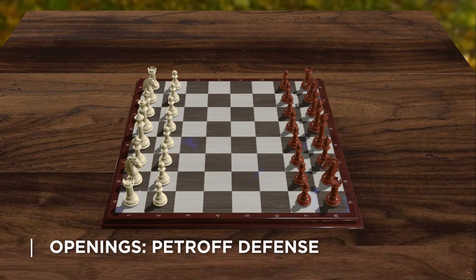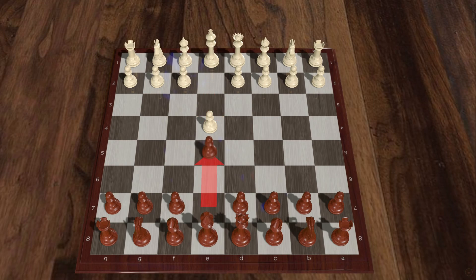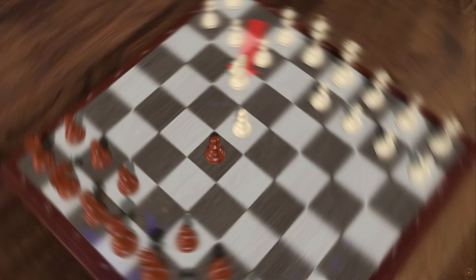Petrov defense is a simple yet solid opening for black. The e-pawns control the central squares.